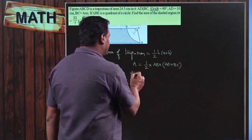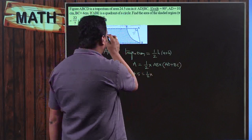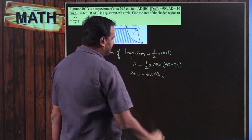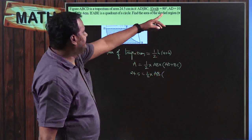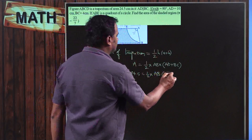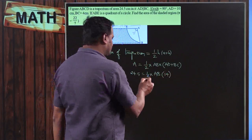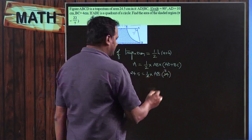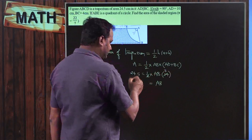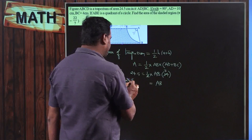So 24.5 = (1/2) × AB × (AD + BC). AD is equal to 10, BC is equal to 4, so 10 + 4 = 14. Now see the cancellation: 2 ones and 2 sevens make 14. Therefore AB = 24.5 divided by 7.